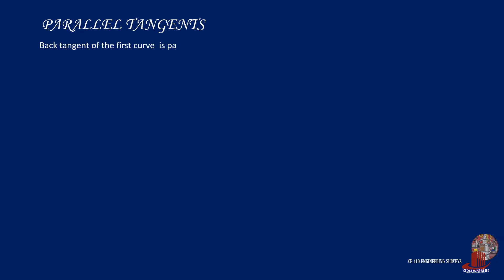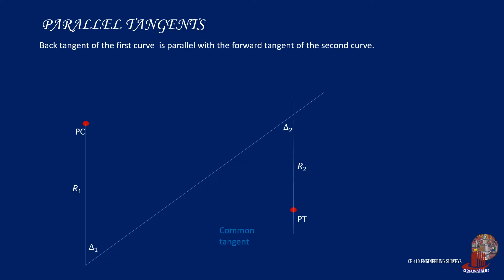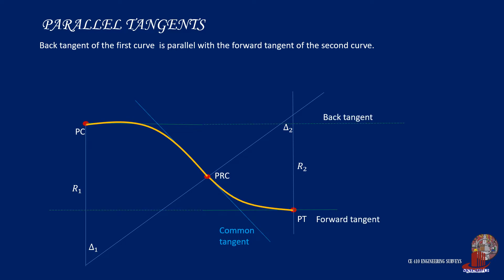The tangents of a reverse curve are taken as the back tangent of the first curve and the forward tangent of the second curve. In parallel tangents, these two elements of the different simple curves are parallel. The perpendicular distance between the two parallel tangents is denoted as P. From the PRC, P can be computed as distances M1 plus M2. The distance between the PC and PT is denoted as AB, computed as L1 plus L2.